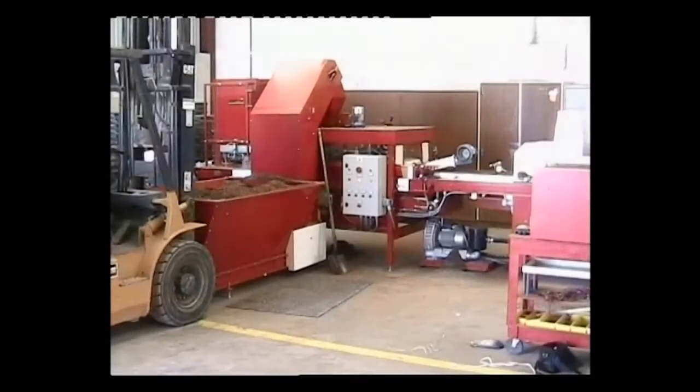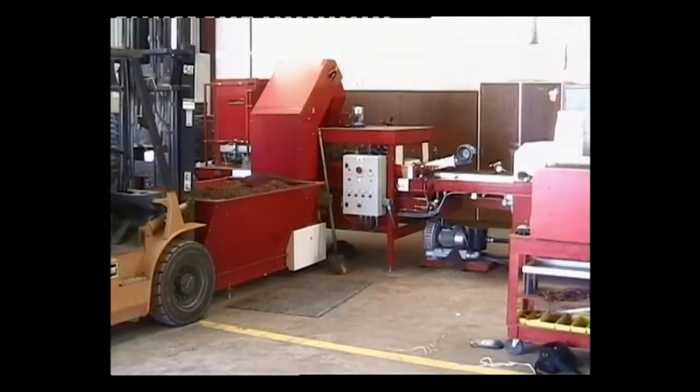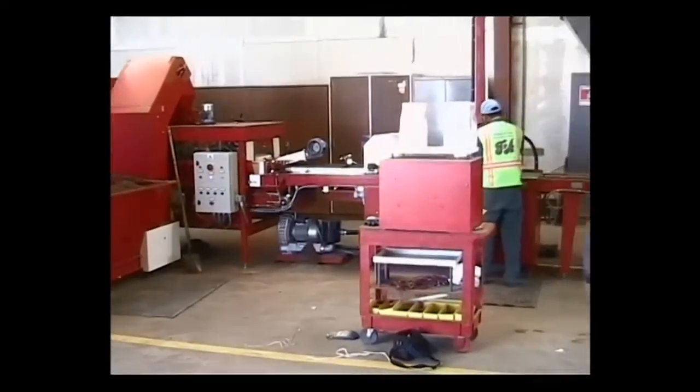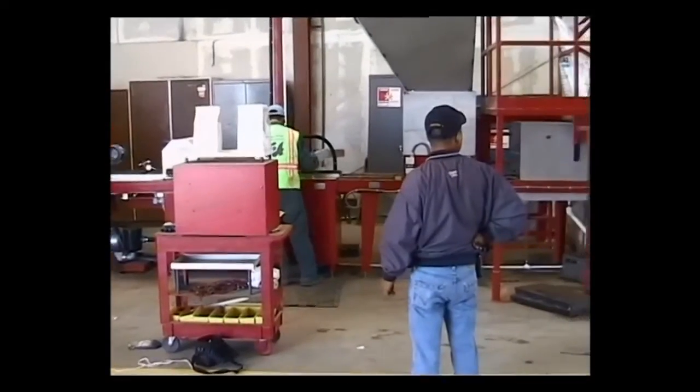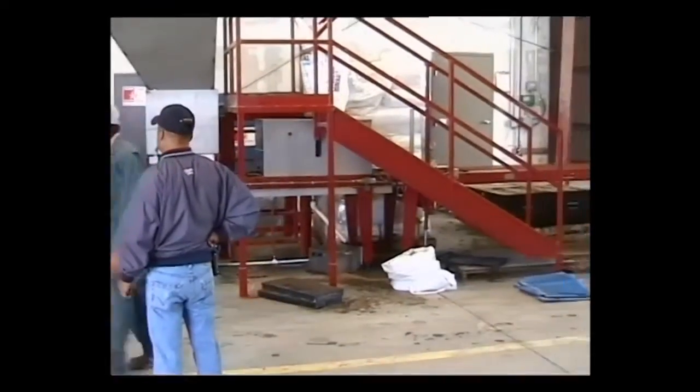The Mosser seeder is unique in achieving high percentage singulation by first of all picking up doubles at the expense of no misses and then removing them with the unique singulation manifold. We now move to the Tanimura and Antle Nursery in Salinas, California where we have a complete installation and here you can see the complete line from tray filler through seeder to vermiculite coverer and tray stacker.